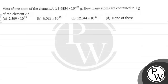Hello, let's read this question. The question says: mass of one atom of element A is 3.9854 into 10 raised to the power minus 23 gram. How many atoms are contained in one gram of the element A?